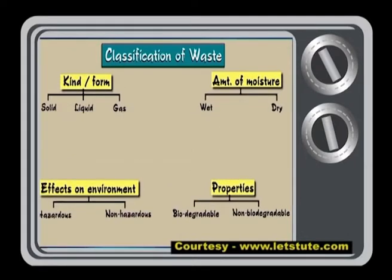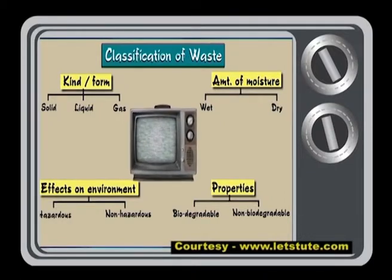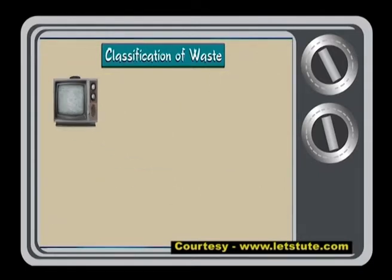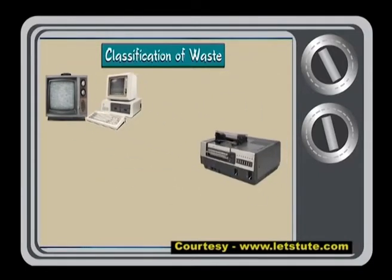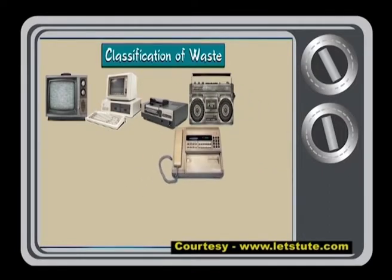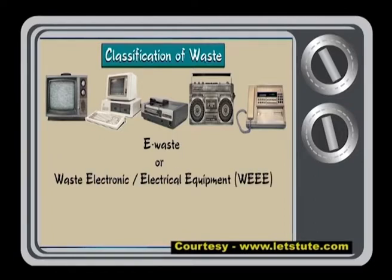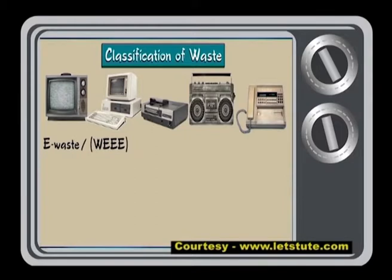So we saw the various ways by which we can classify the waste. But wait — in which category of waste will an old television set fall under? Old television sets and similar products like computers, VCRs, stereos, fax machines, etc. fall under a special category of waste called e-waste, or waste electronic or electrical equipment. It is the name given for electronic products nearing the end of their useful lives.